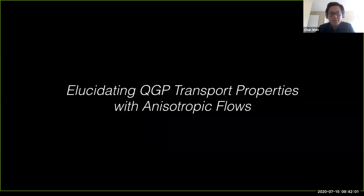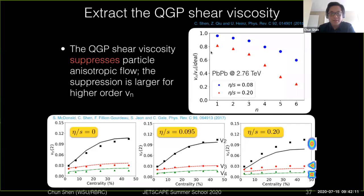We use flow measurements to understand the properties of the quark-gluon plasma and its transport properties. As seen from previous simulations, if you increase the shear viscosity values, you get suppression of the VN coefficients — especially higher-order VNs, which get actually larger suppression.